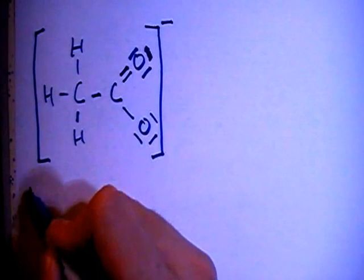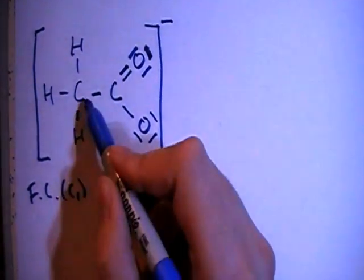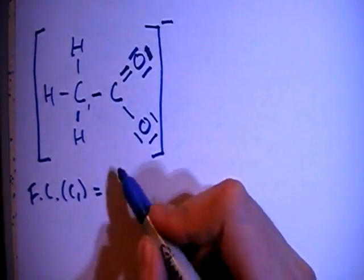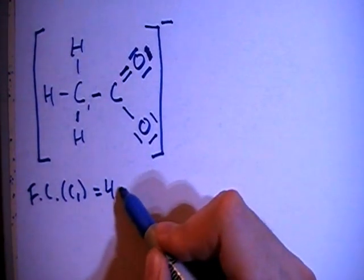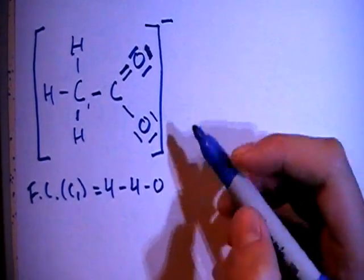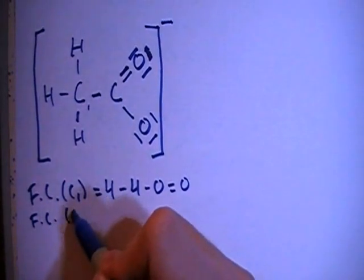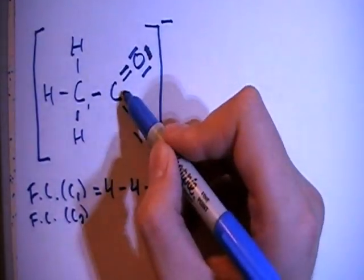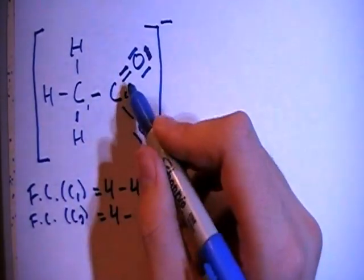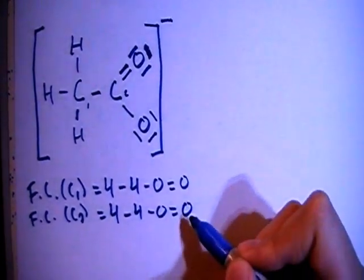Okay, so the formal charges, on carbon 1, which is going to be this one right here, the formal charge there is going to be 4 valence brought in, minus 1, 2, 3, 4 bonds, minus 0 non-bonding electrons for a formal charge of 0. The formal charge on carbon 2, which is this one here, it's going to be 4 valence brought in, minus 1, 2, 3, 4 bonds again, minus 0 non-bonding for a formal charge also of 0.